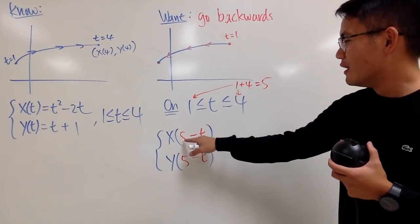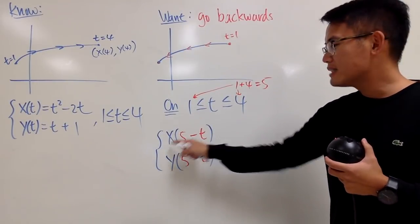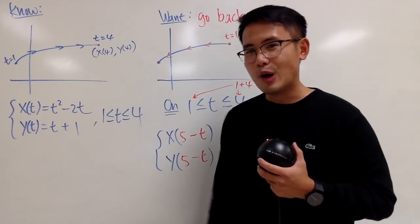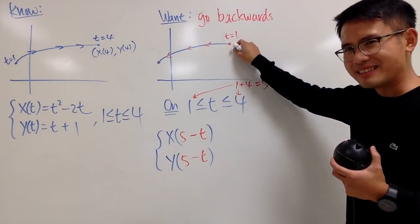Now you see, when you plug in 1 right here, 5 minus 1 is 4. x of 4, congratulations, that was the old point. And now it's going to be right here. How nice is that?